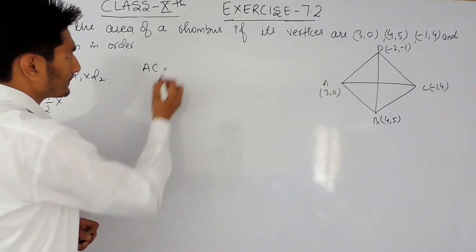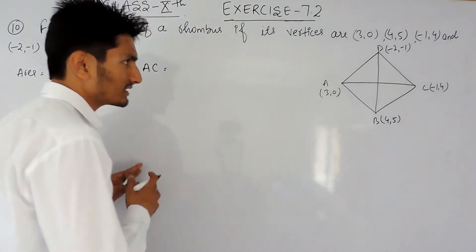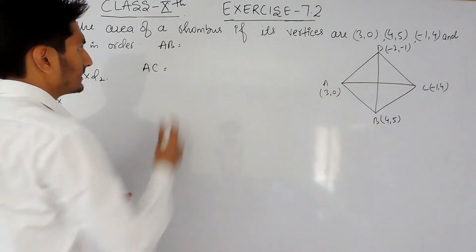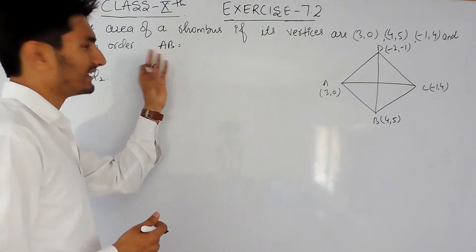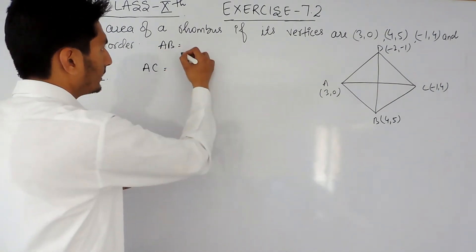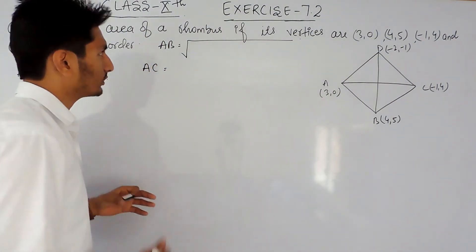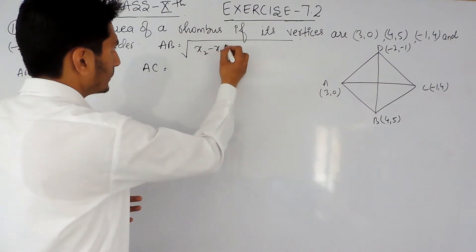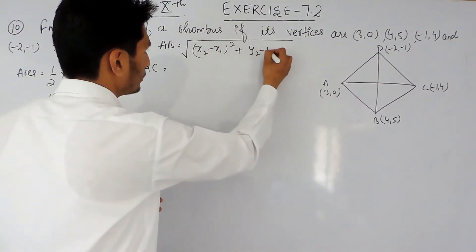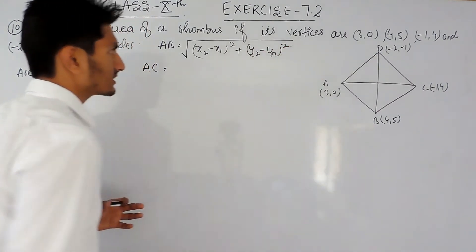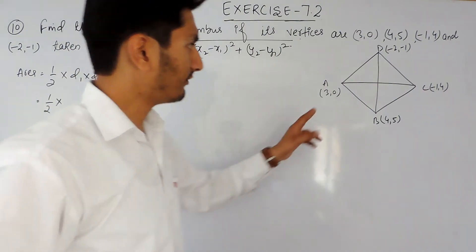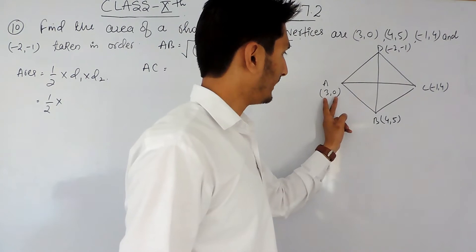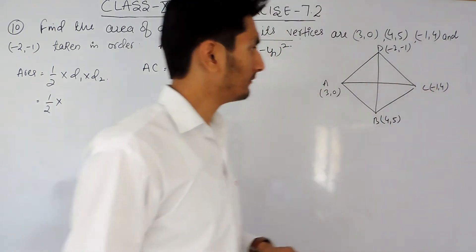The first diagonal is AC. To find the distance between these two points I have to use the distance formula. The distance formula says: if I have to find the distance between two points A and B with coordinates (x1, y1) and (x2, y2), then the distance is the square root of (x2 minus x1) whole square plus (y2 minus y1) whole square. The coordinates of A are (3, 0) and C are (-1, 4).